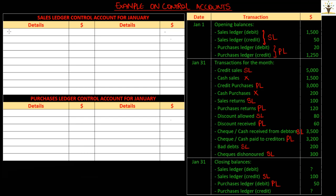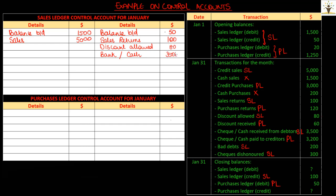Let's start recording. First, bring down the opening balances — debit balance on the debit side and credit balance on the credit side. Credit sales increase the amount due from customers, hence debited in the control account. Sales returns have the opposite effect, so recorded on the credit side. Discounts allowed reduce the amount receivable, hence credited. Checks or cash received from customers also reduce their balance, hence credited. Bad debts are unrecoverable amounts, so the debtor balance is reduced and credited. When checks are dishonored, the amount is again receivable, so debtors are debited — recorded on the debit side of the sales ledger control account.